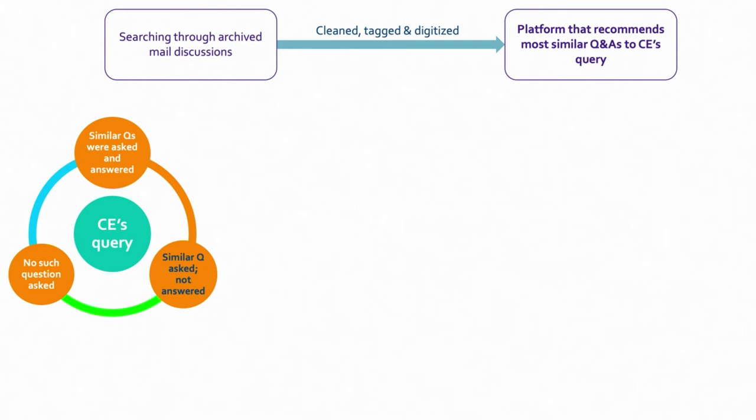Skybridge becomes a platform that surfaces just question-and-answer pairs for whatever query I have. For example, if I have a question about a specific bug, I go to Skybridge and ask. It searches through all the email communications, finds similar queries already discussed, and shows only the relevant question and answer — because it has properly cleaned and tagged data stored internally in the database.